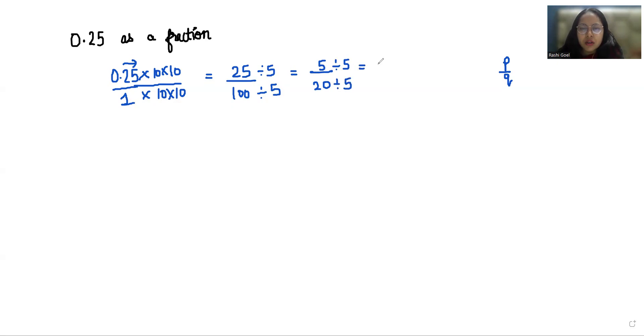This gives us 1 by 4, so 0.25 as a fraction is 1 by 4.